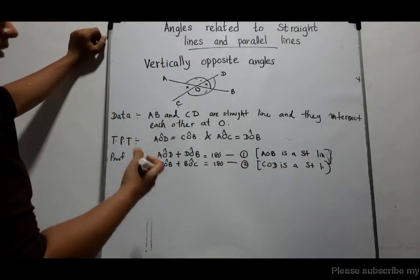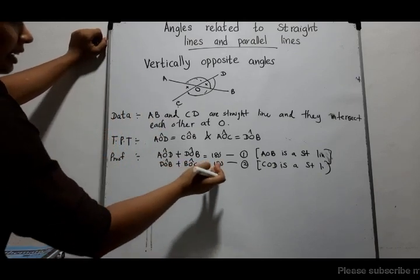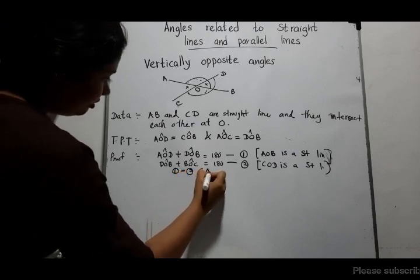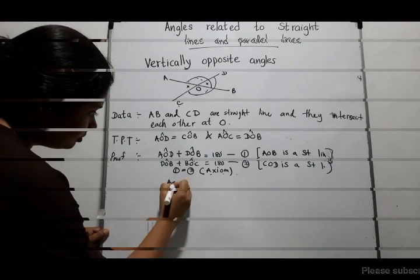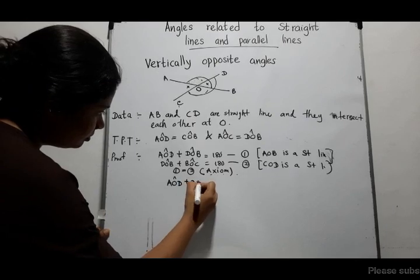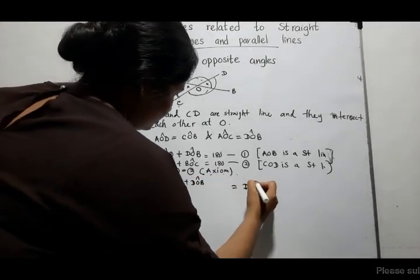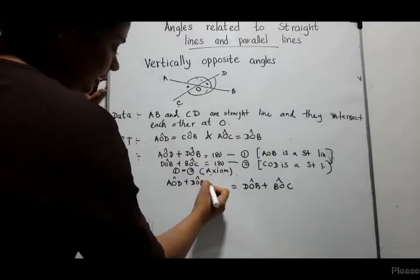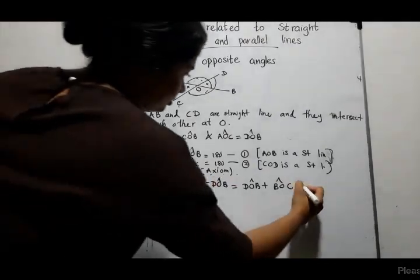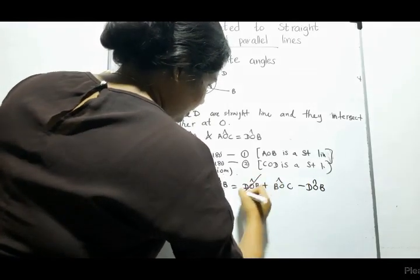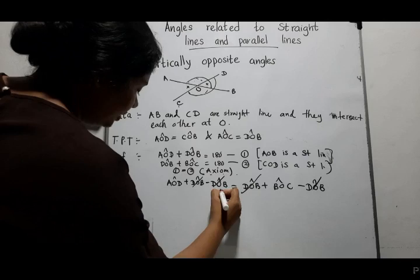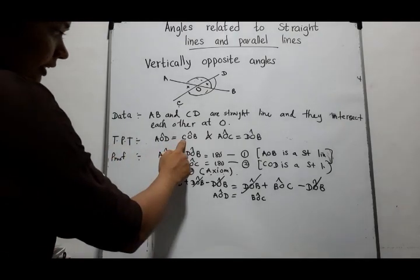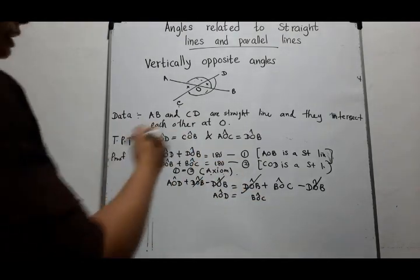Subtracting angle DOB from both sides, we obtain angle AOD equals angle BOC. We have proved the first pair of vertically opposite angles. Similarly, we can prove the other pair.